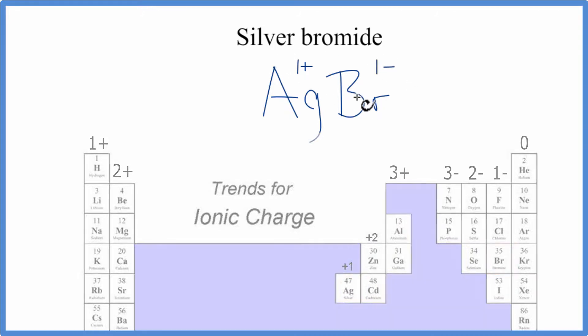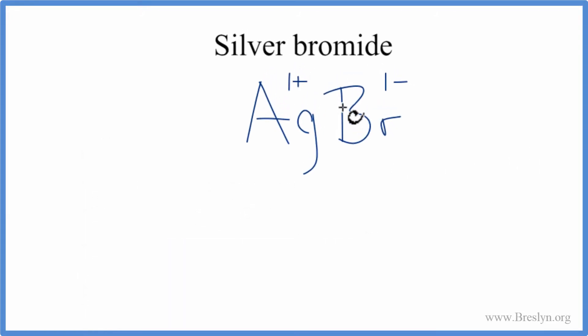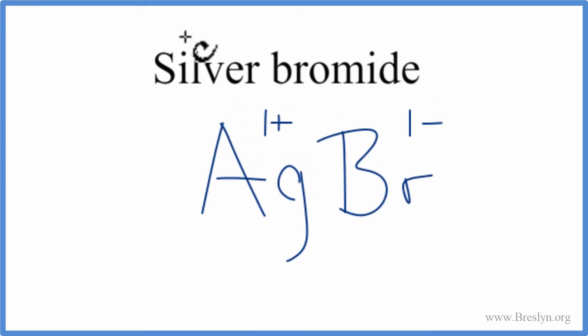So these charges need to add up to zero. We need a net charge of zero in order to have a neutral compound. Silver bromide, that's a neutral compound. One plus, one minus, that adds up to zero. The net charge is zero, and we're done.